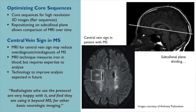Another emerging technology addressed was the central vein sign. It's become very popular because it might improve specificity for diagnosing MS and minimize false diagnoses. Because MRI is so much more available, many people have a few white spots and are being misdiagnosed with MS. The central vein sign is a simple MRI technique that can identify lesions that have a vein in the center, which is much more common in MS lesions. However, it's still labor-intensive to examine all lesions for the central vein sign, so it hasn't been incorporated into diagnostic criteria yet, but this is expected to change in the next five years.